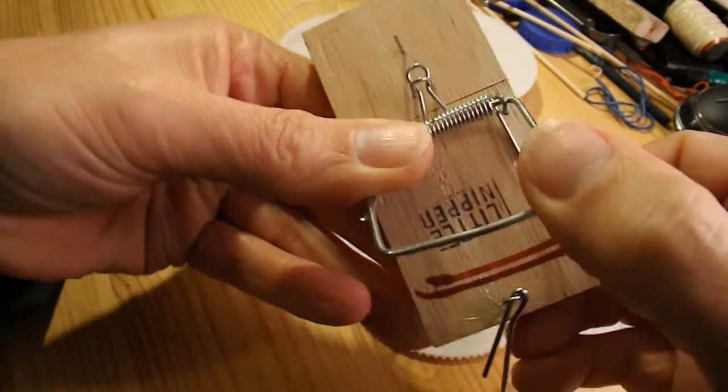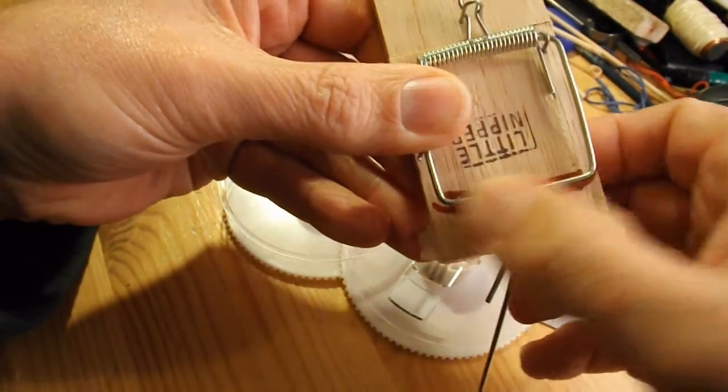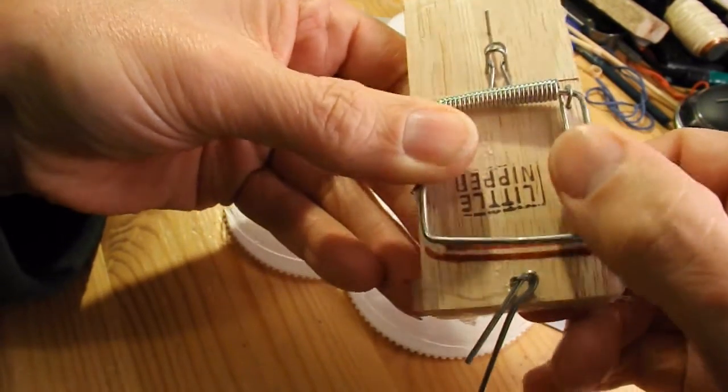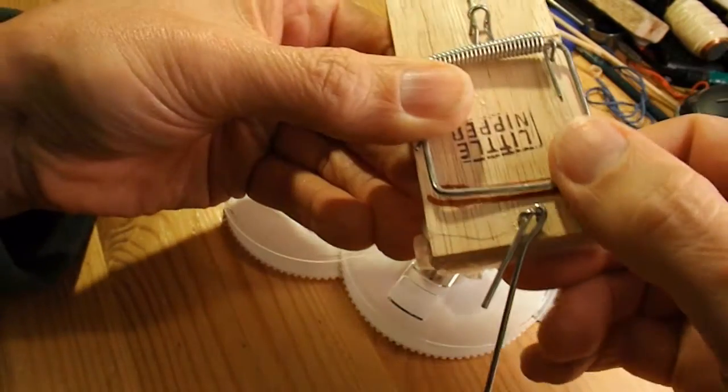I've just marked, with red pen there, exactly where the lever arm comes across. Because that's where, on the other side, I'm gonna fit the axle.